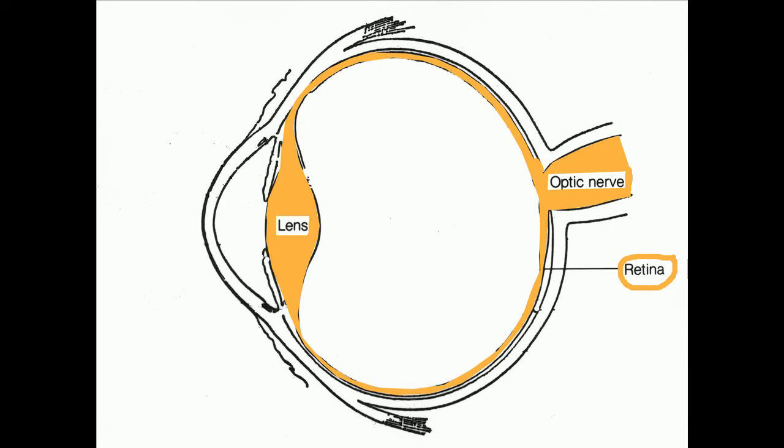At the front of the eye, we find the lens, which is a transparent structure that focuses the light on the retina.